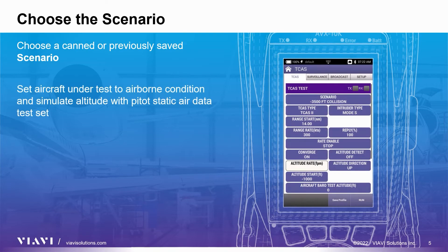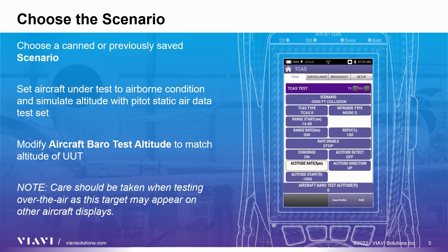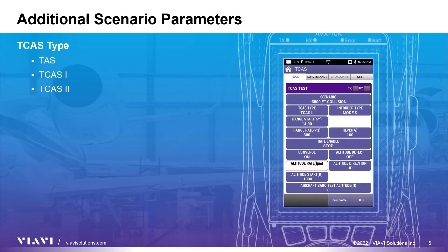Before running a test scenario, the aircraft under test needs to be set to an airborne condition, and altitude needs to be simulated using an air data test set. Once a scenario has been loaded, any of the values displayed with a blue background can be changed as desired. The most important entry is the aircraft barometric altitude field, which should match the altitude of the unit under test. Note, care should be taken when testing over the air as this target may appear on other nearby aircraft displays. You can start the scenario now and for most testing, running with a CAN scenario should paint a target and trigger advisories as needed.